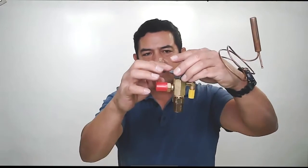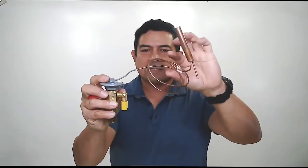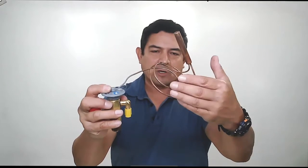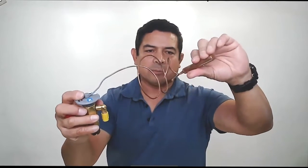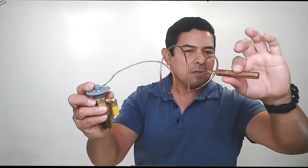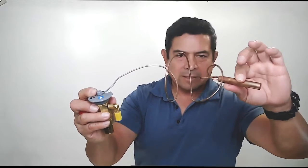Now the power head has this attachment here. It has the sensing transmission tube and the sensing bulb. The sensing bulb needs to be attached to the suction line, but we have to keep a couple of things in mind.